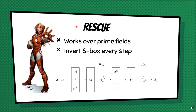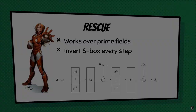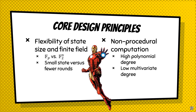JARVIS and Vision both worked over binary extension fields. But many applications need to work over prime fields instead. So we redesigned our principles and made a cipher called Rescue. Rescue uses a non-linear layer which is the monomial x to the power alpha, interchangeably with its compositional inverse x to the power 1/alpha, and again uses a shark-like structure.